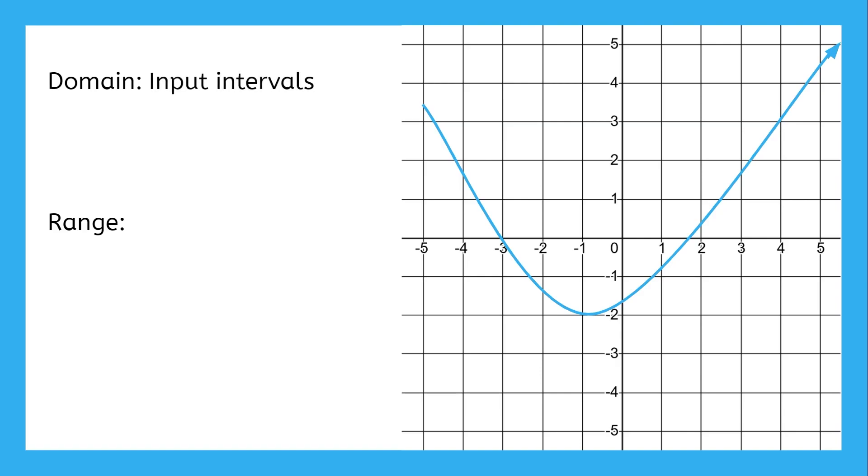Instead of individual values, we can just list the interval that all the points are on. For this graph, the graph begins at negative five and continues to the right forever, never stopping, as we can see from this arrow. How would we write that the value can be negative five or anything higher? We've done this before. An inequality.